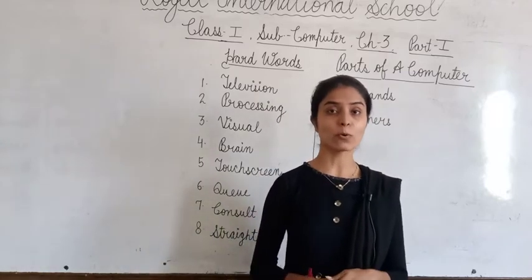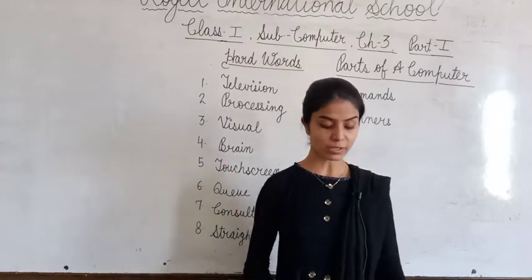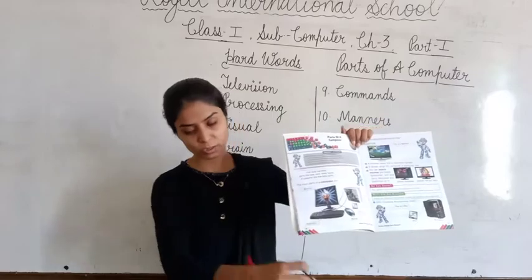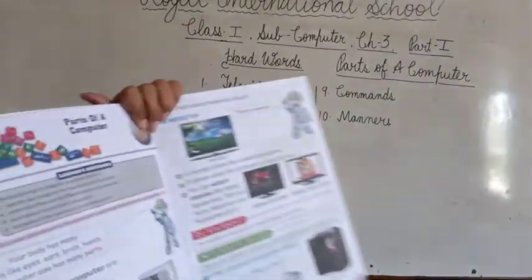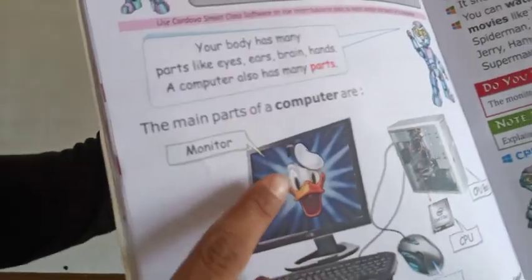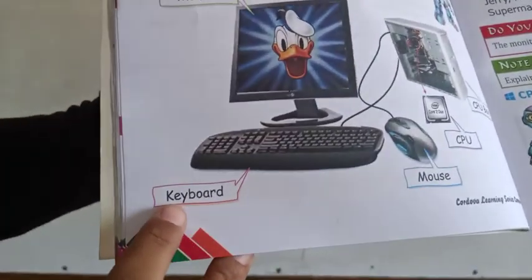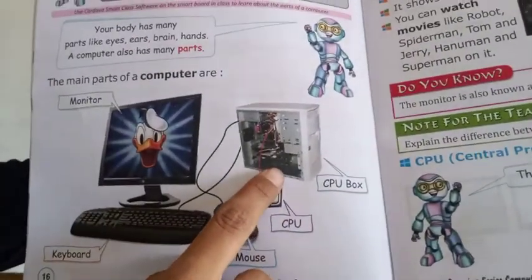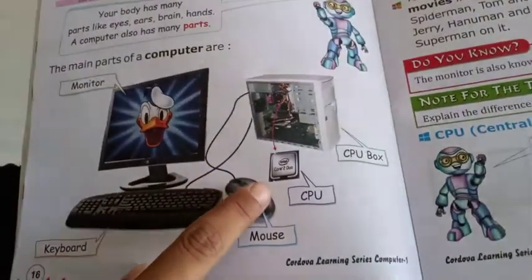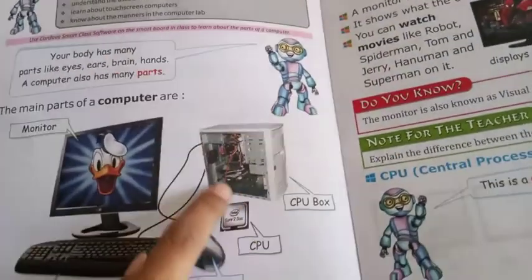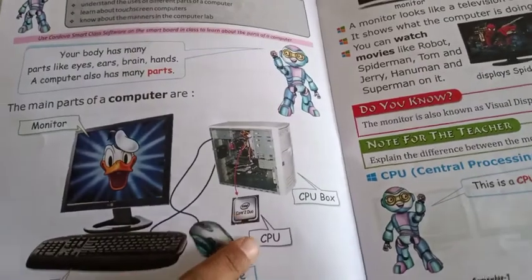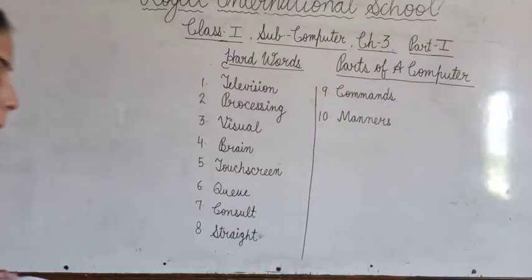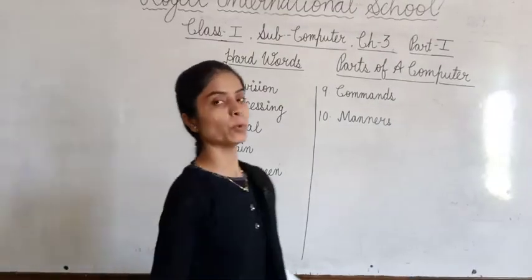M-O-N-I-T-O-R — monitor. Picture bhi pata chal jayi. Monitor, keyboard, CPU box, and mouse. Yeh hota hai CPU, yeh hota hai box, aur iske andar hota hai CPU chip. Ye hain main parts: monitor, keyboard, CPU, and mouse.